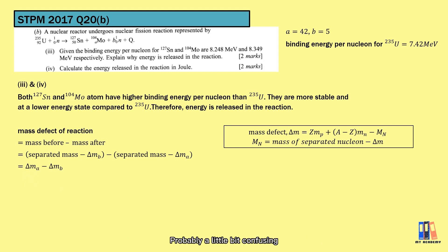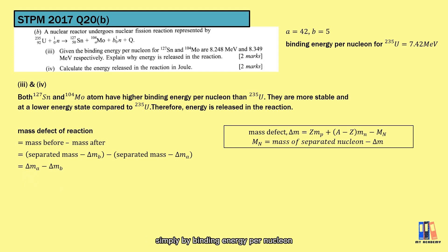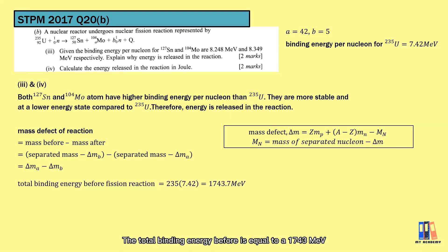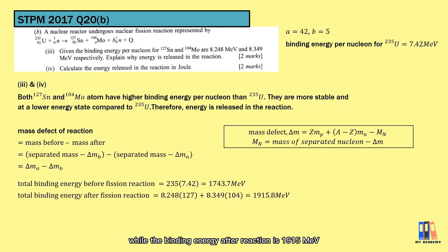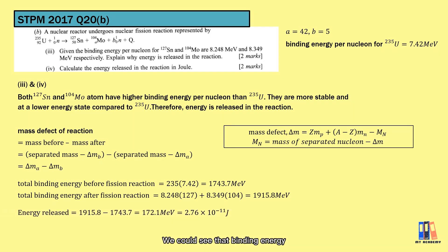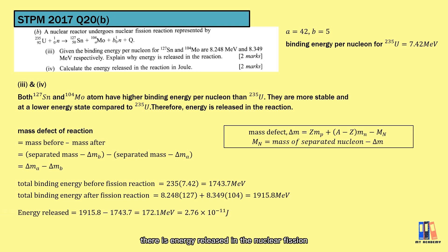Proceeding with the calculation: binding energy is obtained by multiplying binding energy per nucleon by the nucleon number. The total binding energy before the reaction is 1743 MeV, while after the reaction it is 1915 MeV. The binding energy after is higher, indicating that the mass defect is positive and energy is released in the nuclear fission.